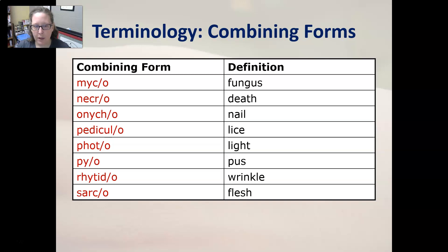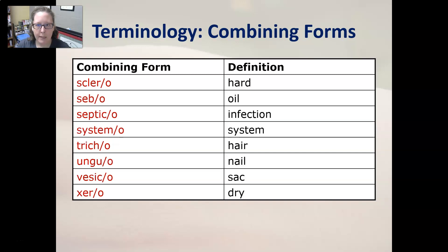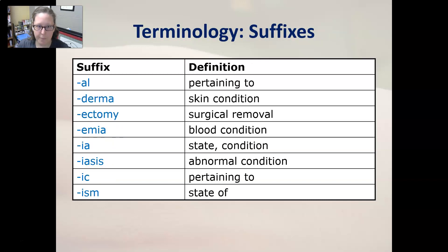Necro is death, onyco is nail, pediculo is lice, photo is light, pio is pus, rhitido is wrinkle, sarco is flesh, sclero is hard, sebo is oil, septico is infection, systemo is system, trico is hair, unguo is nail, vesicle is sac, and xero or zero is dry.